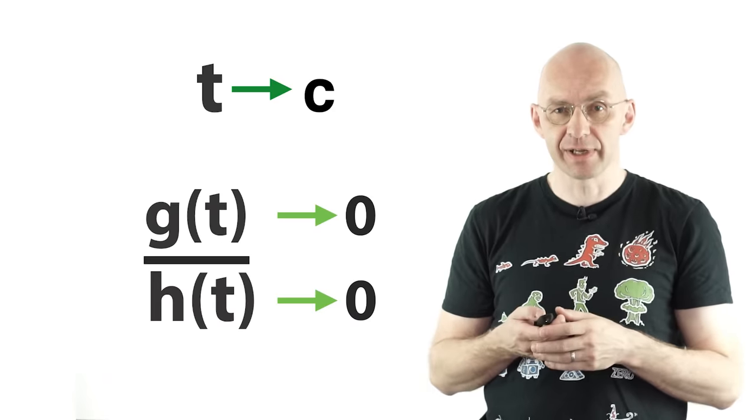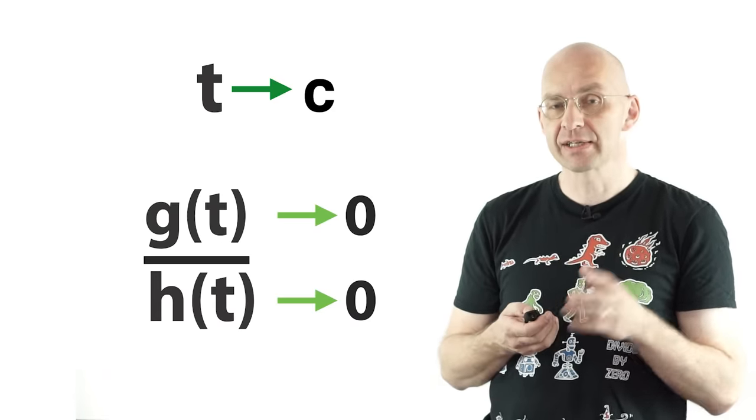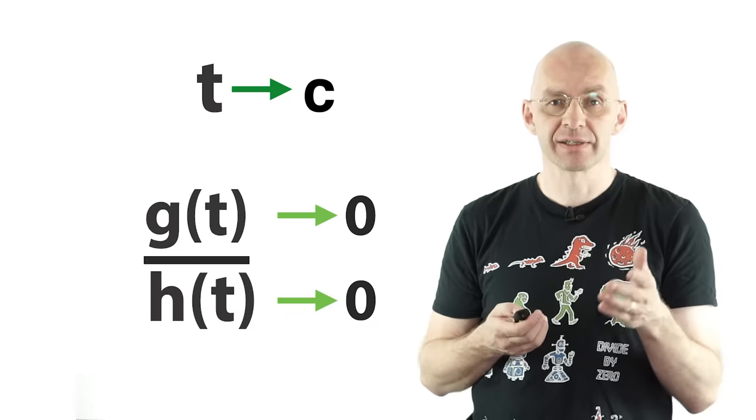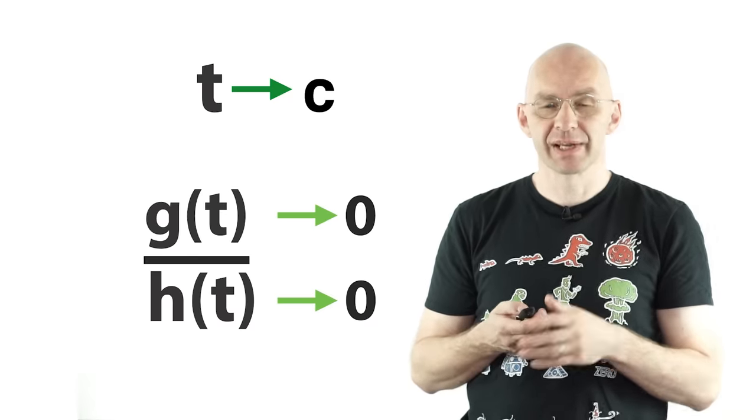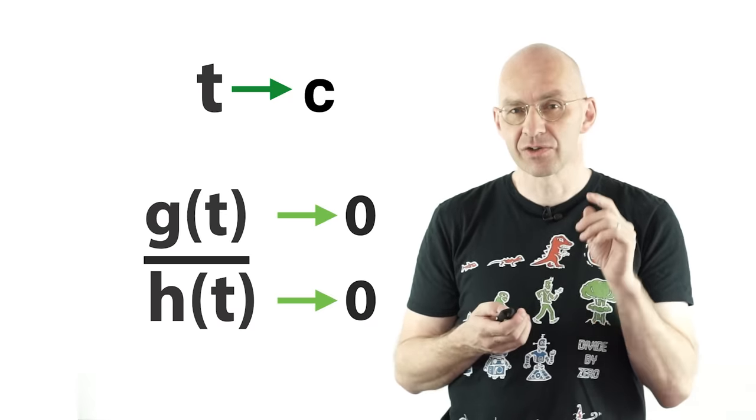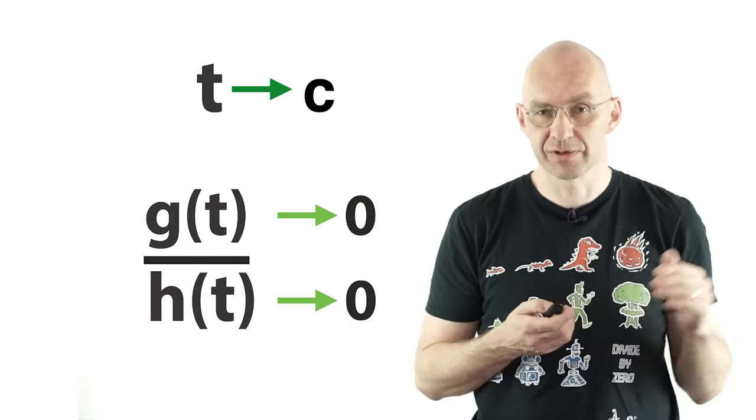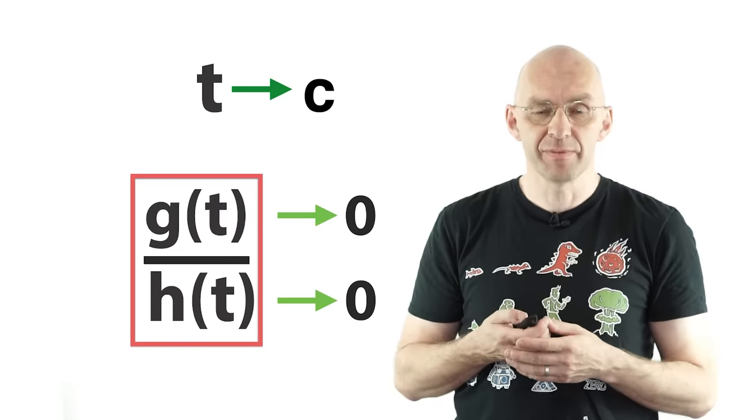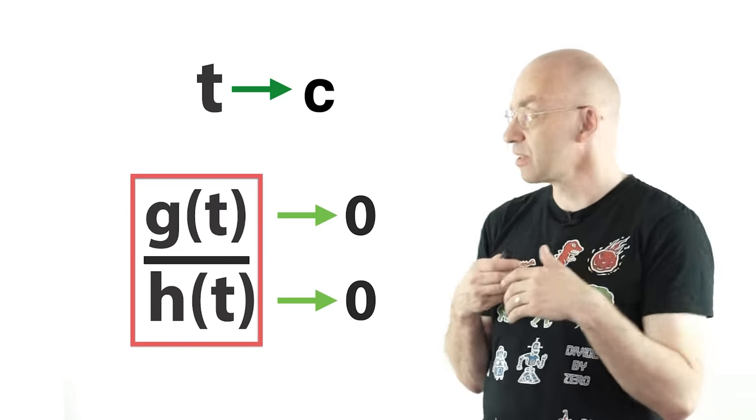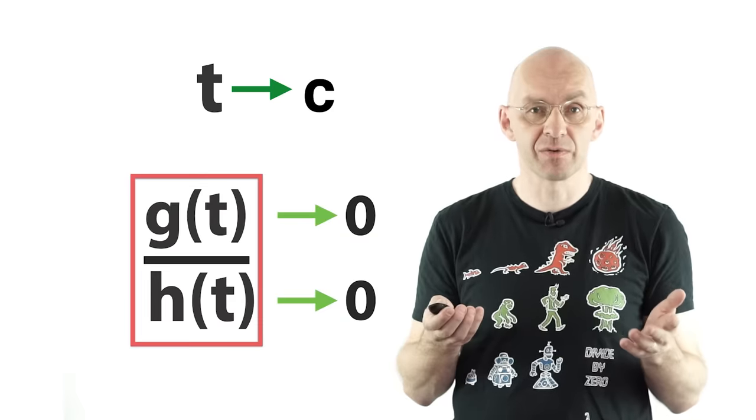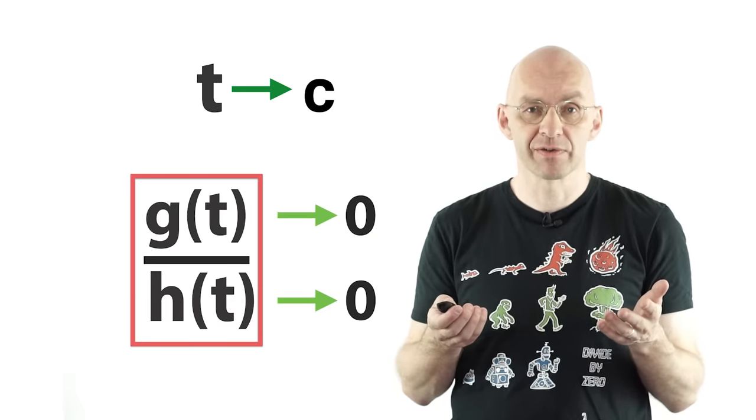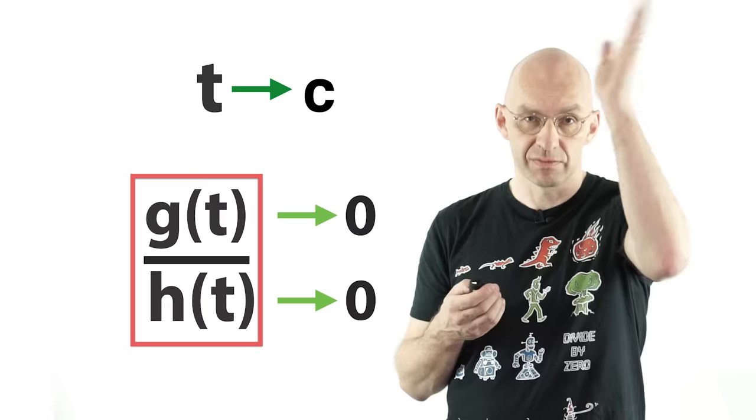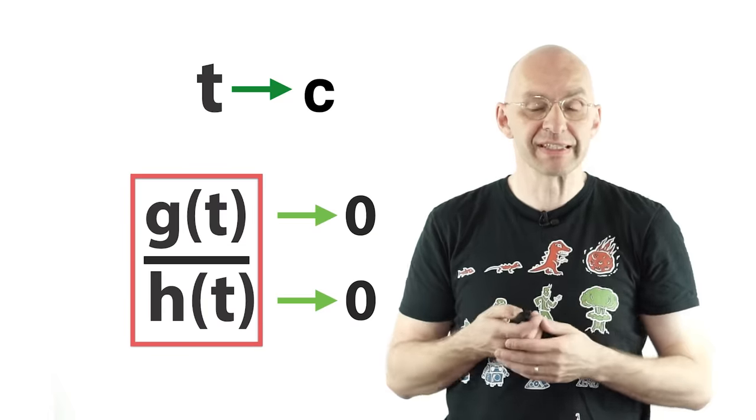And as the variable approaches a critical value both g and h approach zero. Whenever you get something like this happening then you say that the quotient takes on the indeterminate form zero divided by zero at the critical value. And actually just here I better say the critical value can also be infinity. So t can also go off to infinity. What makes this whole thing indeterminate? Well, by just looking at the information we've got so far it's not clear at all what the quotient does as we approach the critical value. It could go to a specific value, it could go to infinity or it could do nothing reasonable.